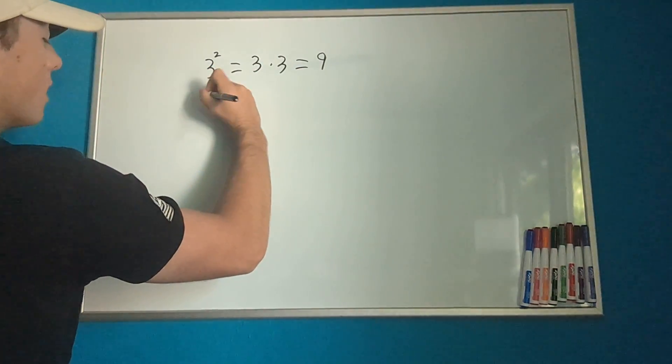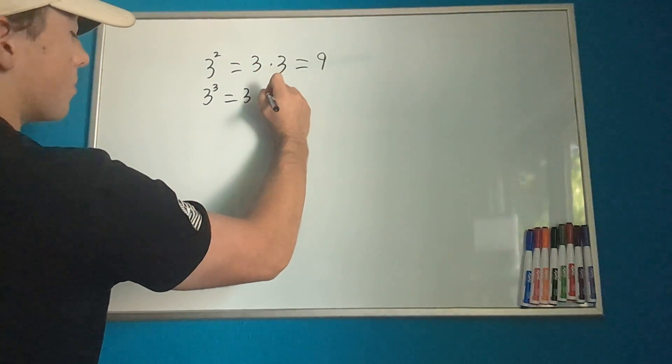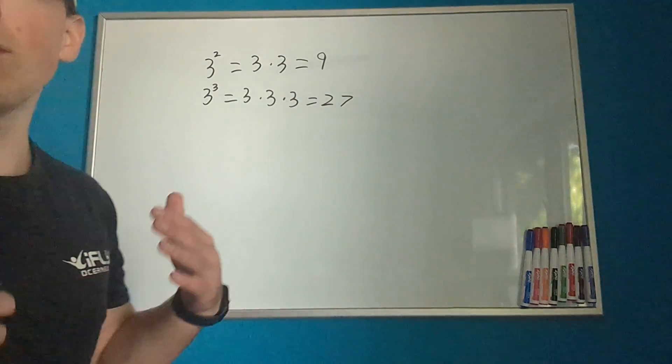If we have 3 to the power of 3, that equals 3 times 3 times 3, which equals 27. But now, with tetration, we're going to be introducing the concept of a power tower.